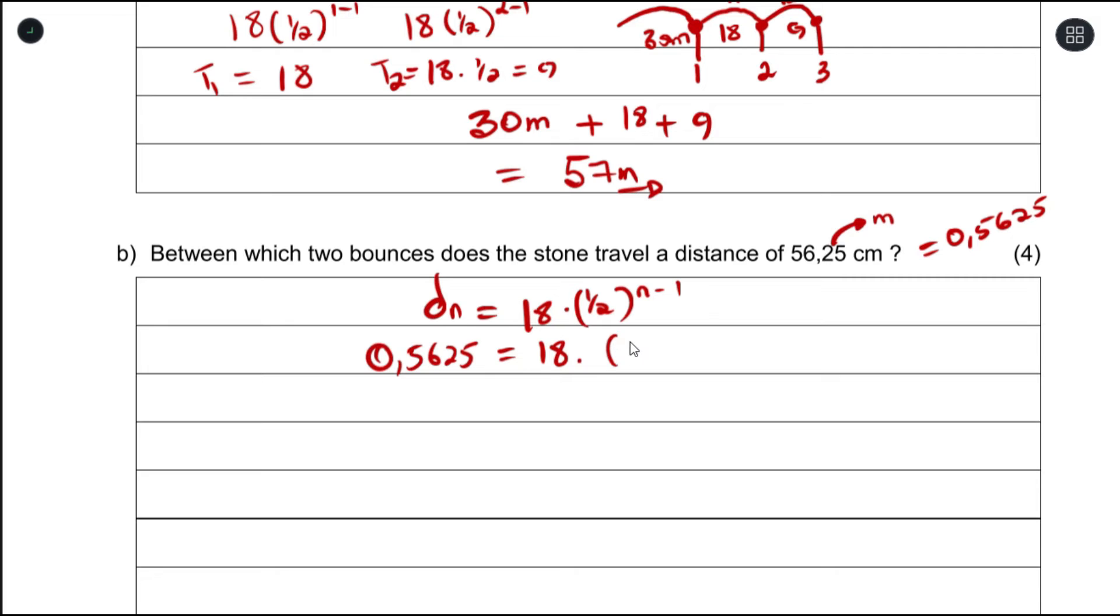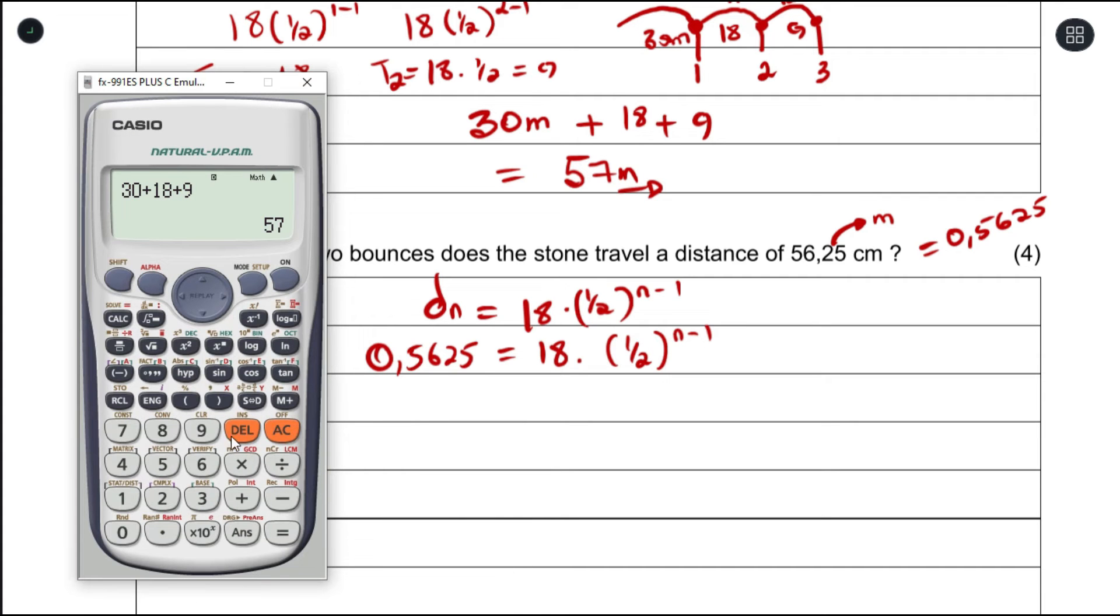So now the distance traveled is 0.5625. This equals 18 times one-half to the power of n minus 1, and we are trying to find n. First thing we'll do is divide by 18, so 0.5625 divided by 18 will give you 1 over 32.